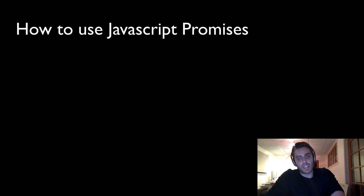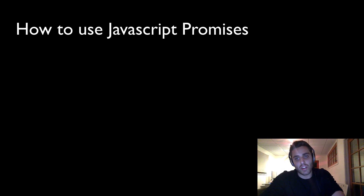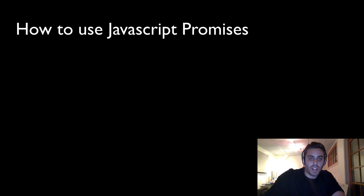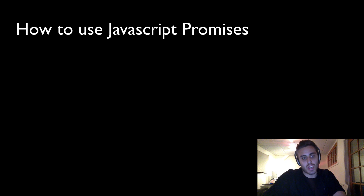How to use JavaScript promises. JavaScript promises represent an alternative system for managing asynchronous requests in your code base. When I say alternative, I mean an alternative to callbacks. If you've written any JavaScript code in the past, you've definitely used a callback function before — something like this jQuery AJAX function.